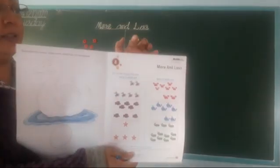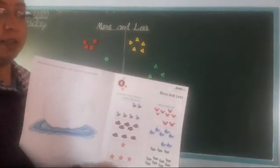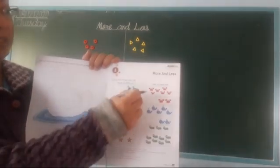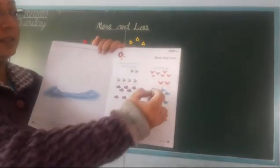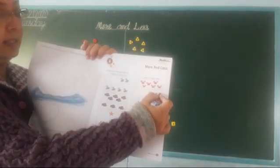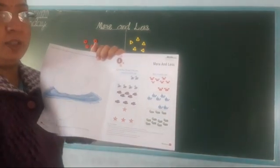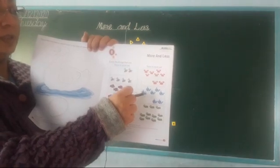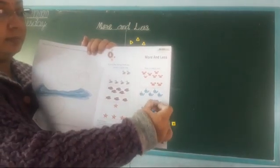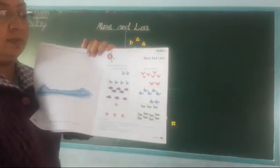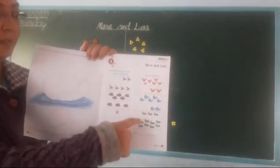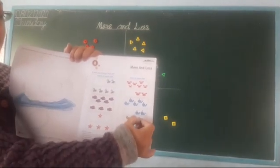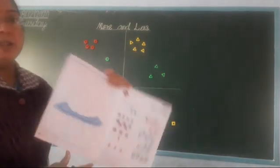Now this one is more and this one is less. Clear children? This one is less and this one is more. Understood, children?